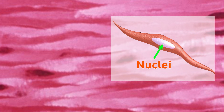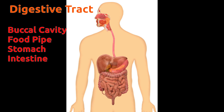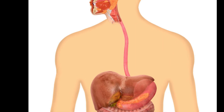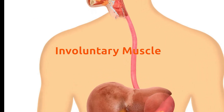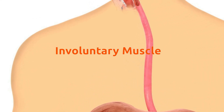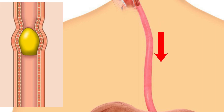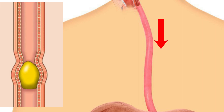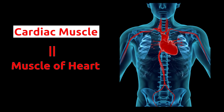Muscle cells in these tissues are small and pointy at the end. Non-striated tissues are found on the wall of the digestive tract, urinary bladder, and other internal organs. Movement of these muscles is not controlled by our mind and thus they are called involuntary muscles. Our food moves in the digestive tract because of contraction of these muscles.